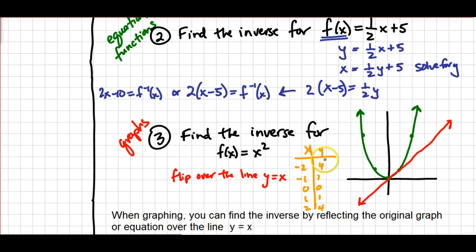So I'm going to graph 4, negative 2 as my first coordinate. And then 1, negative 1, 0, 0 stayed the same. 1, 1 stays the same. Then I'm going to graph 4, 2.